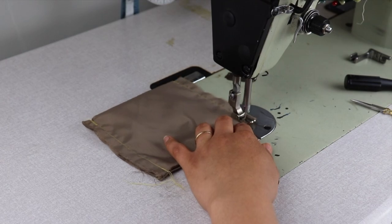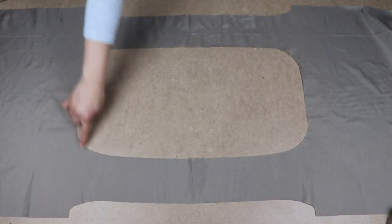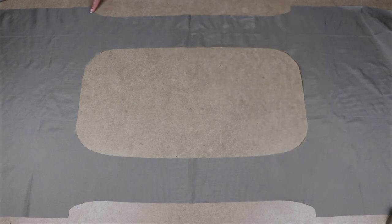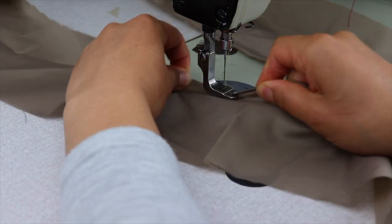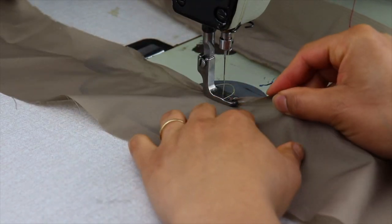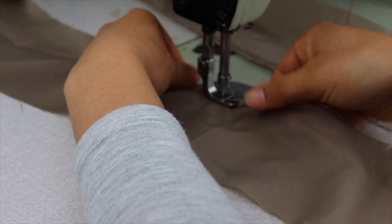This will be serged, but while we're at the straight stitch machine, we will use a rolled hem foot to finish the inner and outer handle straps. To start, roll your edge an eighth and an eighth and place under the foot.